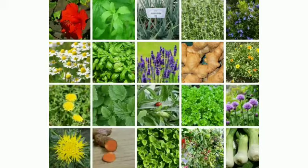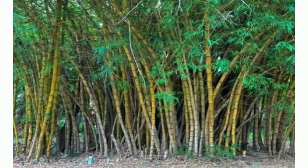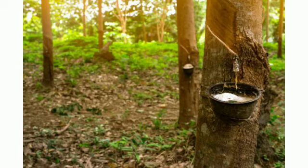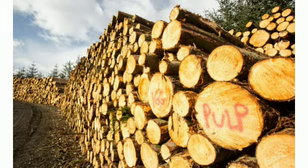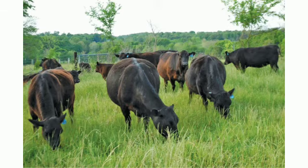Likewise, we also get flowers and medicinal plants from plants. Similarly, we get wood, grass, bamboo, paper, and rubber from trees in the forest. Half of the timber cut each year is used as fuel for heating and cooking. Many forest lands are used for mining, agriculture, grazing, etc.